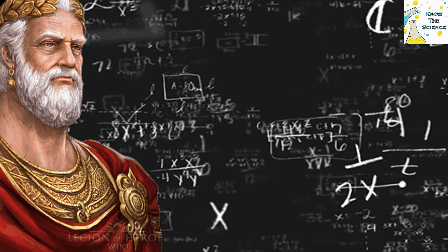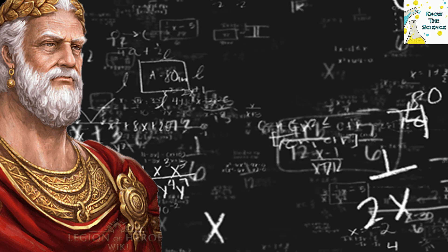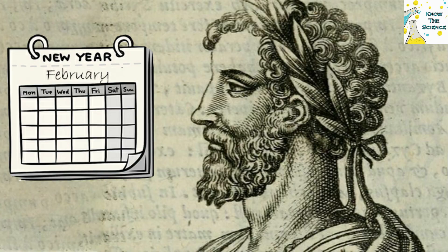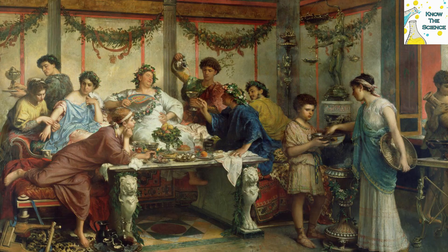In the end, at least one month out of the 12 needed to contain an even number of days. This is because of a simple mathematical fact: the sum of any even amount of odd numbers will always equal an even number, and Numa wanted the total to be odd. So Numa chose February — a month that would be host to Roman rituals honoring the dead — as the unlucky month to consist of 28 days.